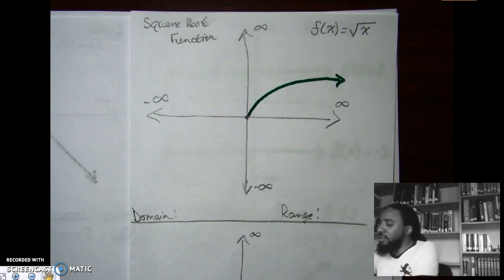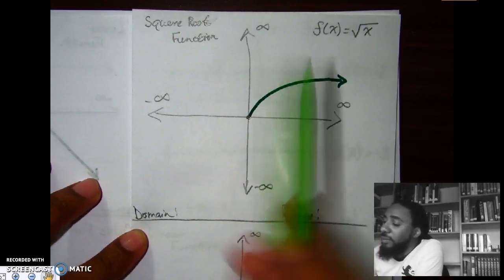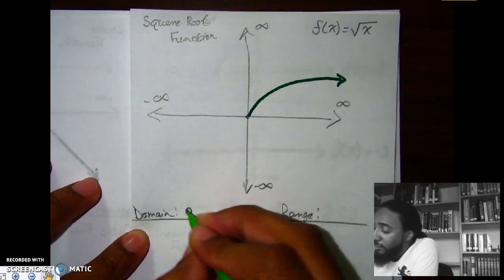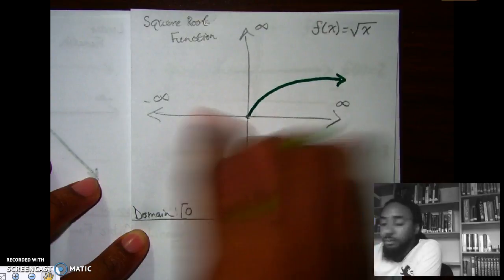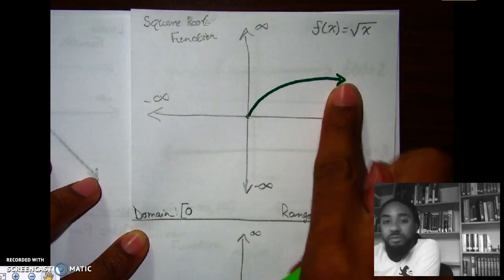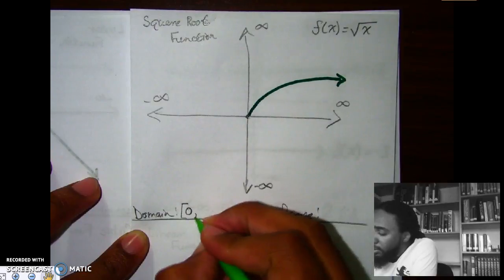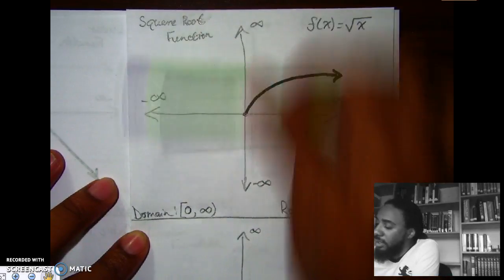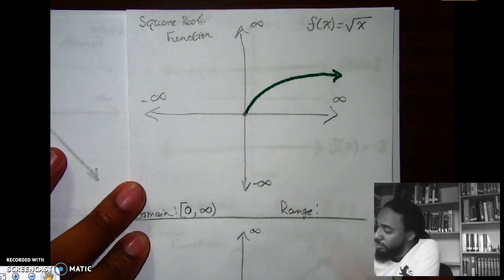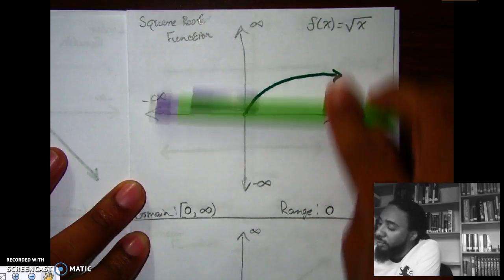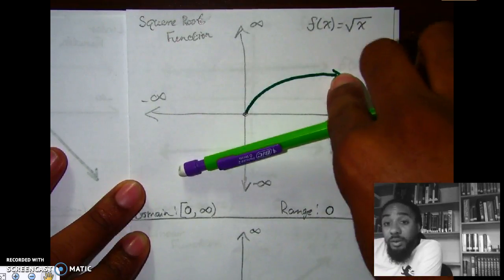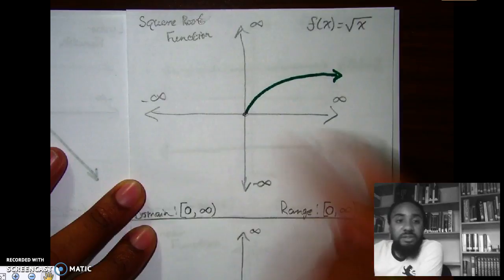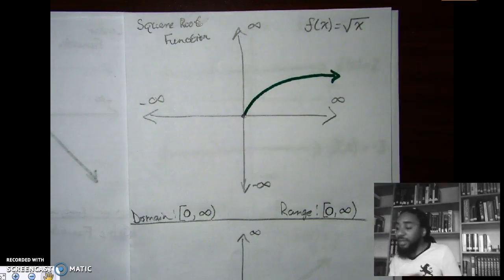For domain of the square root function, going from left to right: it starts at a closed circle at zero, so we use a bracket, and then it goes on forever with an arrow — so the domain is bracket zero to positive infinity. For range, going from bottom to top there's nothing below zero until we reach zero, and then it goes up with an arrow — so range is also bracket zero to positive infinity. It goes both to the right and upward at the same time.